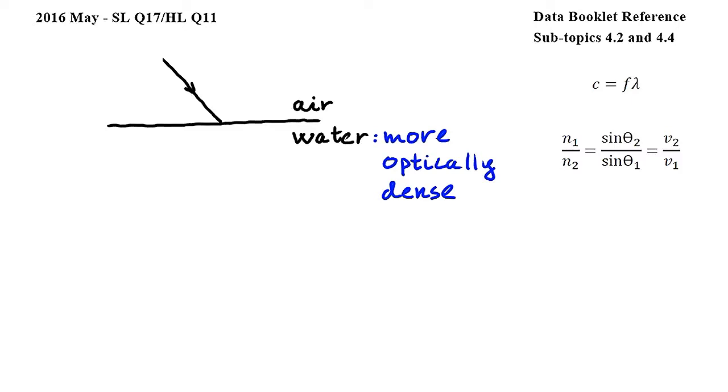In this question we have to decide what happens to the wavelength and the angle that the light ray makes with the normal when light passes from air to water.